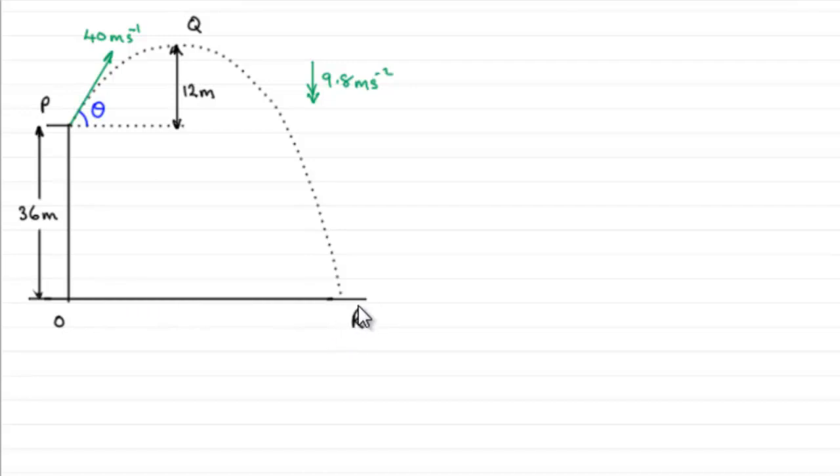So first of all, we've got to work out what this angle theta is. To do a question like this, we need to think about splitting this velocity of 40 meters per second into two components: one will be horizontal and the other one will be vertical.